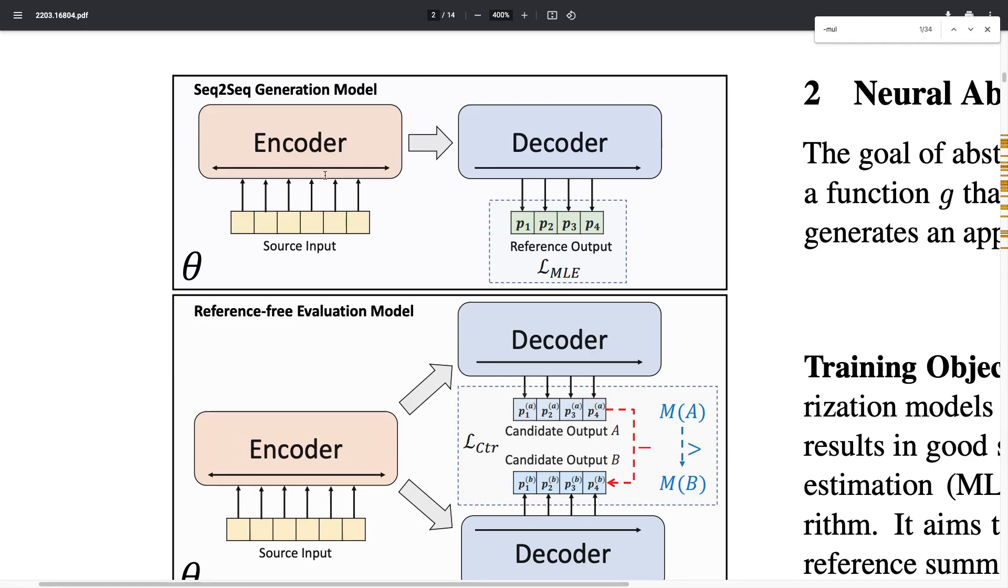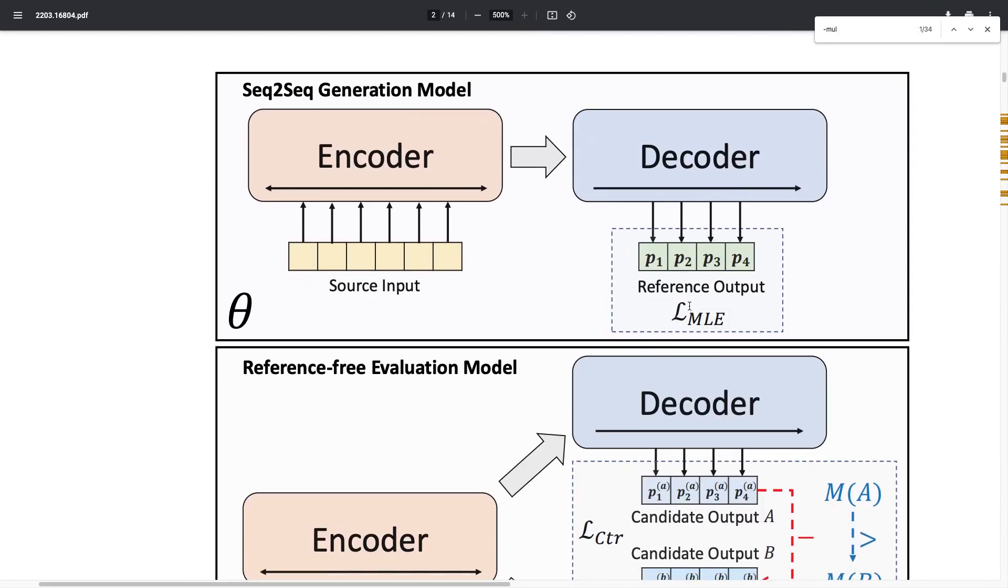A typical approach to abstractive summarization is to train an encoder-decoder model to generate a summary in an autoregressive manner conditioned on the input article. The model is typically trained using maximum likelihood estimation (MLE), which maximizes the predictive probability of a single reference summary from the dataset. Here we have an example reference and we're comparing the probability distribution generated for each token to that gold standard reference.